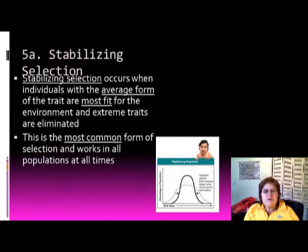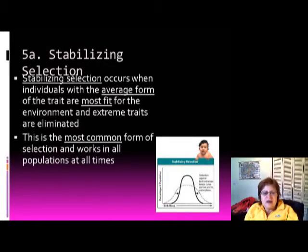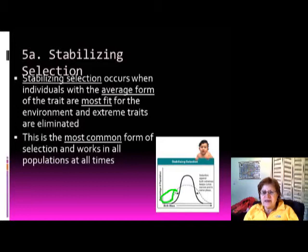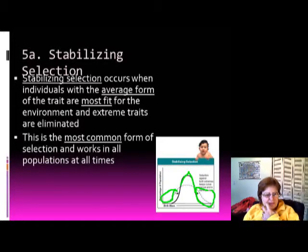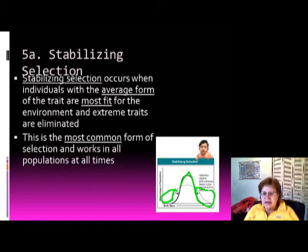Stabilizing selection occurs when individuals with the most average form of a trait are the most fit for the environment. Extreme traits are eliminated, and those average individuals are the ones that get to mate. This is the most common form of natural selection and operates in every population all the time.